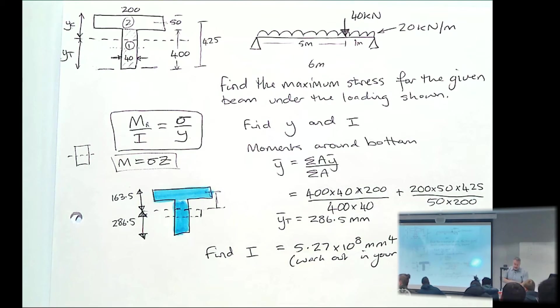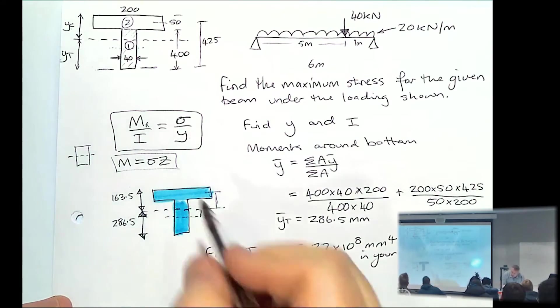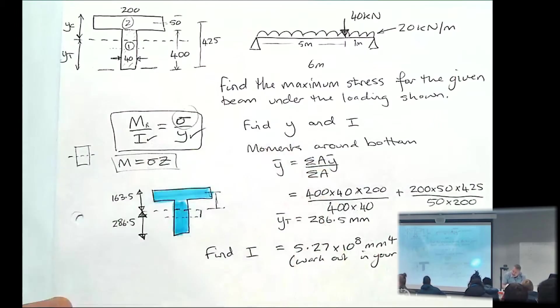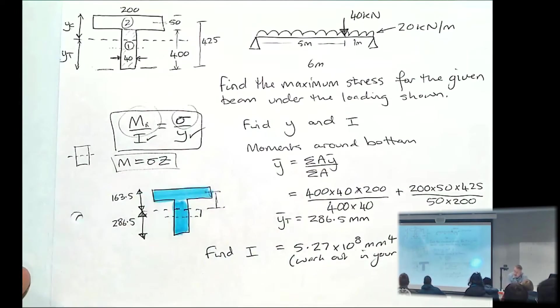But you can find out what I is. So we have Y. We have I. We're trying to find out what this stress is. Now we need to look at the internal moment.